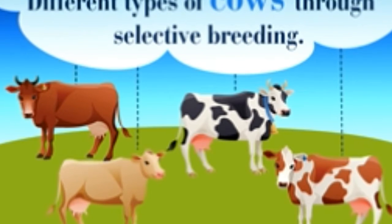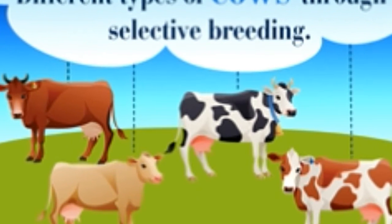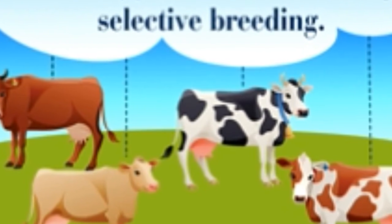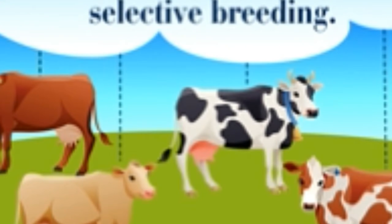Did you know? Around 70,000 BC, a mysterious illness almost wiped the human population off the Earth. Only a couple of thousand survived. Although we are the dominant species today, once we were an endangered species.